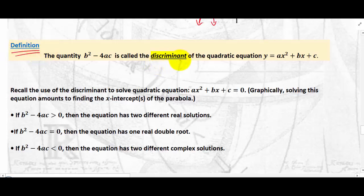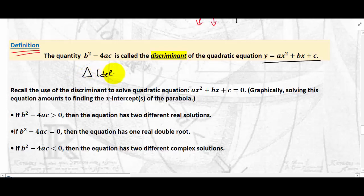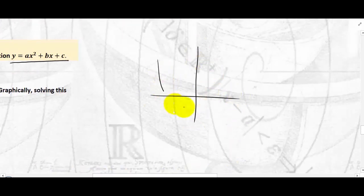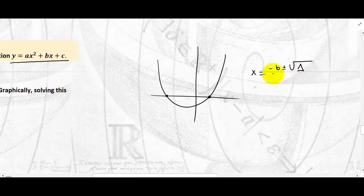The discriminant of a quadratic equation in standard form is the quantity b² − 4ac. I will use the Greek letter delta (Δ) to denote the discriminant: Δ = b² − 4ac. You find the discriminant in the quadratic formula: x = (−b ± √Δ) / 2a.